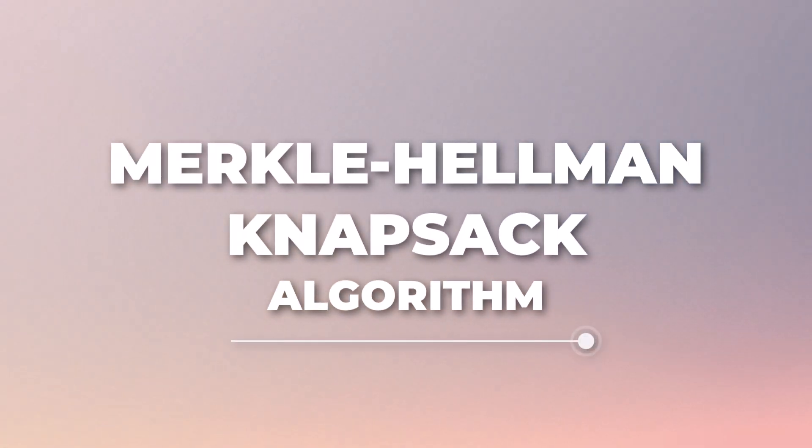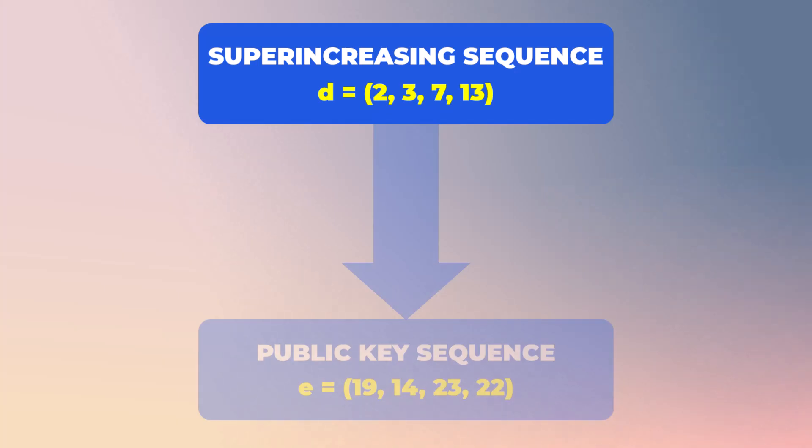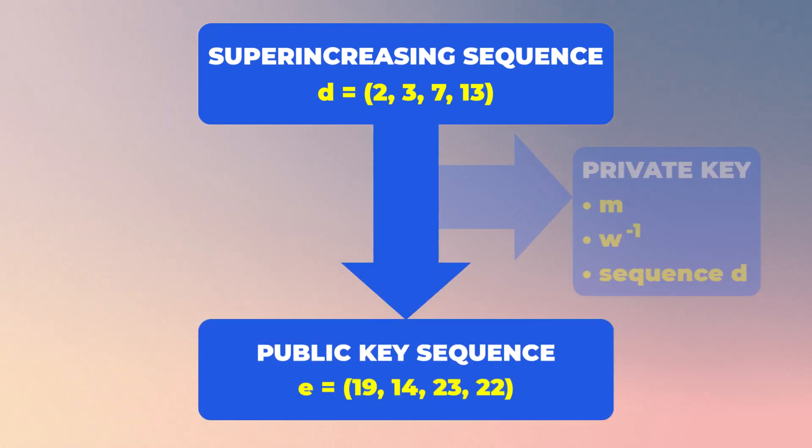In the first part of this series, we looked at how to produce a public key using the Merkle-Hellman-Knapsack algorithm. The process began with a special sequence of numbers known as a super-increasing sequence, and through a series of steps, it was transformed into a non-super-increasing sequence that served as our public key.